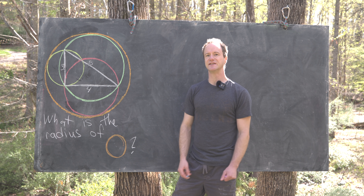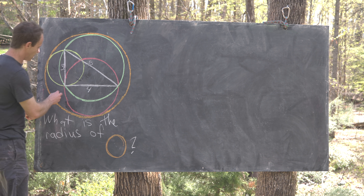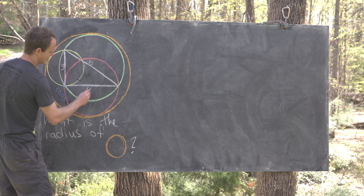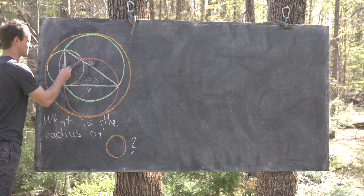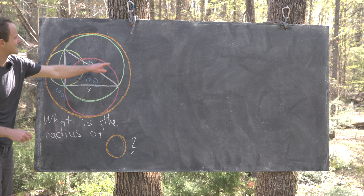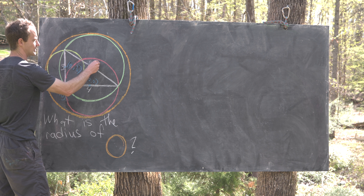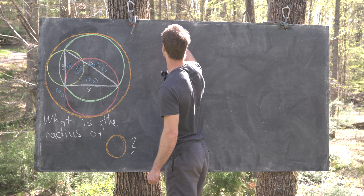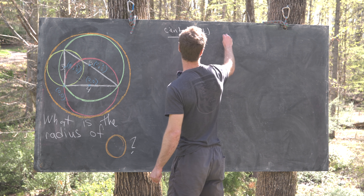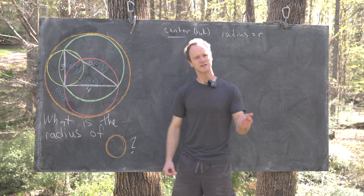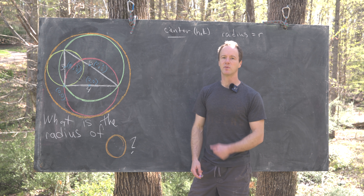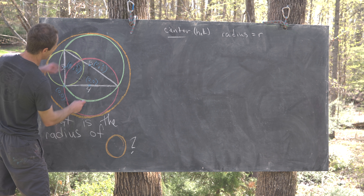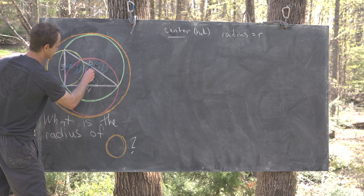First, we introduce a coordinate system, placing one vertex at the origin. That means the red circle has center (2, 0), the yellow circle has center (0, 3/2), and the green circle attached to the hypotenuse has center (2, 3/2). We denote the orange circle's center as (h, k) with radius r, and place the center approximately on the diagram.